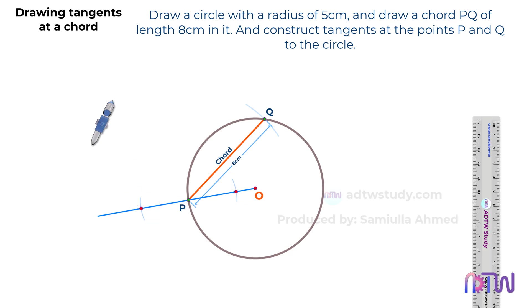Afterwards, readjust the compass to a length greater than half of the previous length. With the points where the arcs intersect as centers, draw additional arcs as shown.